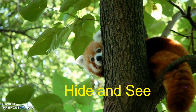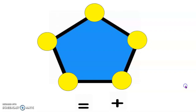Let's play a counting game. This counting game is called Hide and See. Let's look at our shape. This is called the pentagon.